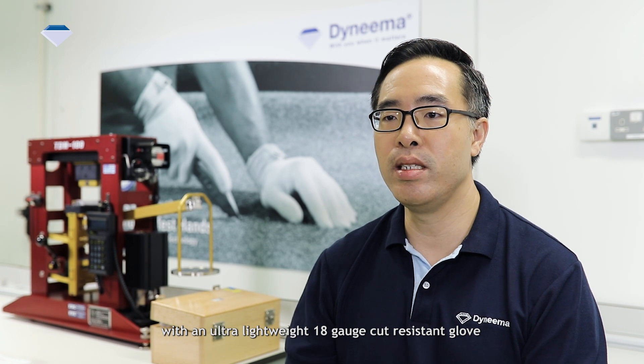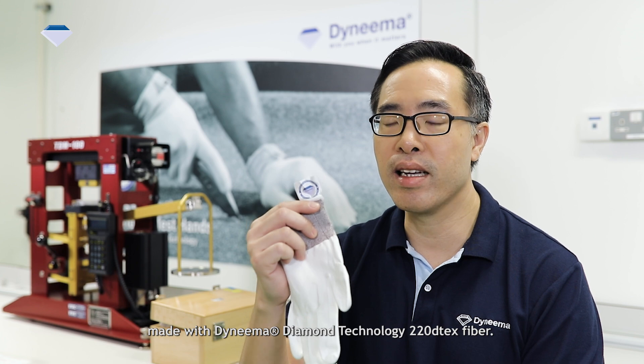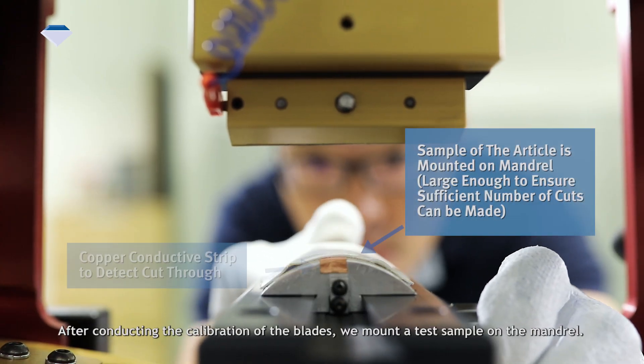Let me demonstrate the full ISO 13997 test with an ultra-lightweight 18-gauge cut-resistant glove made with Dyneema Diamond technology 220 D-TEX fiber. After conducting the calibration of the blades, we mount a test sample on the mandrel.